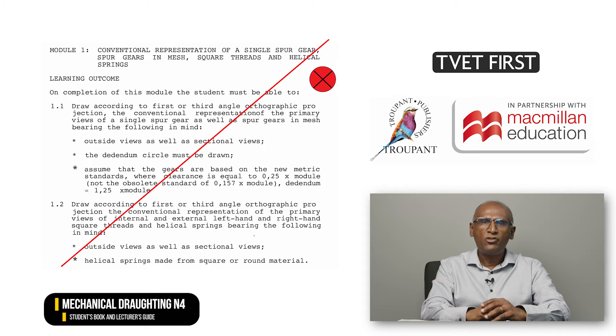How does the new curriculum differ from the previous one? In all the modules, the learning outcomes have been reworded to make the requirements clearer, and some outcomes have been trimmed down. The main change relates to Module 1, which used to be called conventional representation of a single spur gear, spur gears in mesh, square threads and helical springs. This content has been completely removed from the 2024 curriculum.